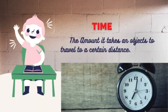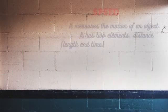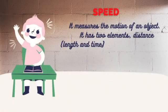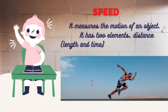Time is the amount it takes an object to travel a certain distance. Speed measures the motion of an object. It has two elements: distance and time.